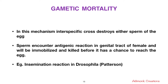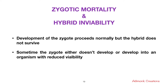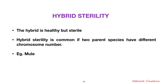The second post-zygotic mechanism is zygotic mortality and hybrid inviability. Development of the zygote proceeds normally but the hybrid does not survive — sometimes the zygote either doesn't develop or develops into an organism with very reduced viability. In hybrid sterility, the hybrid offspring is formed and appears healthy, but it is sterile.